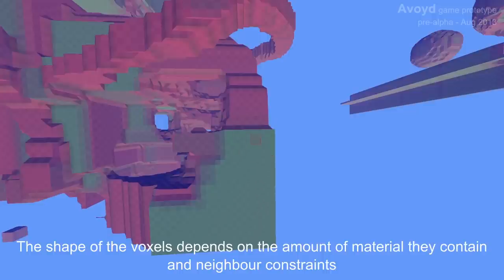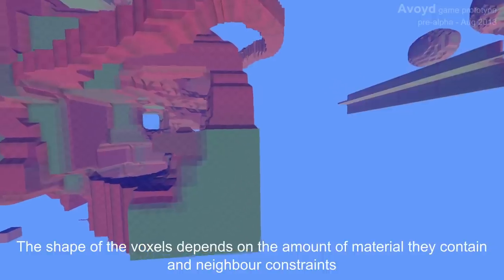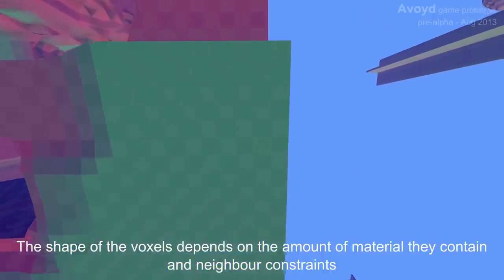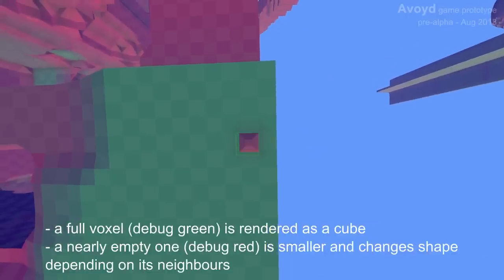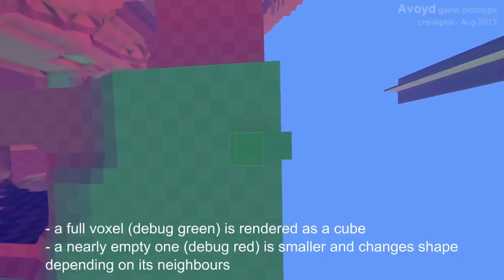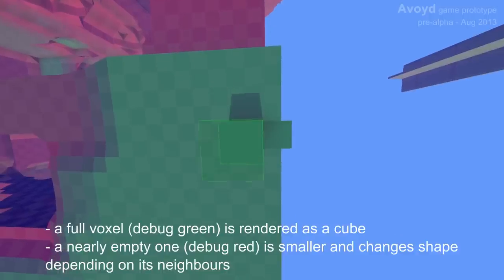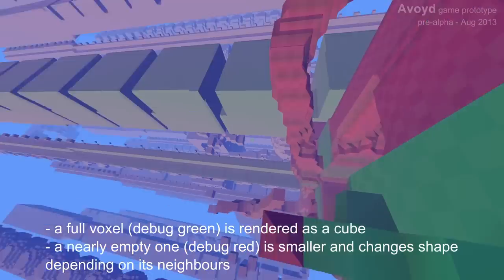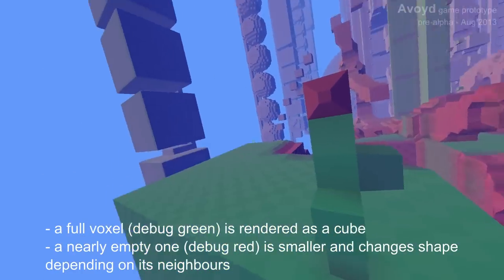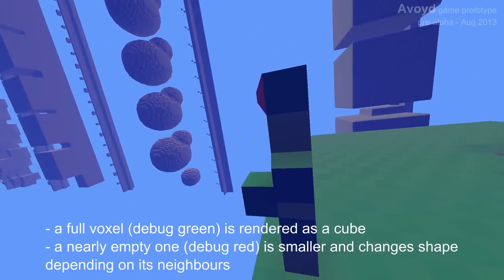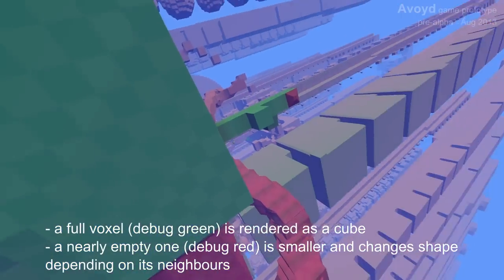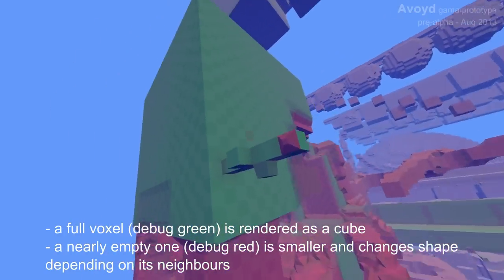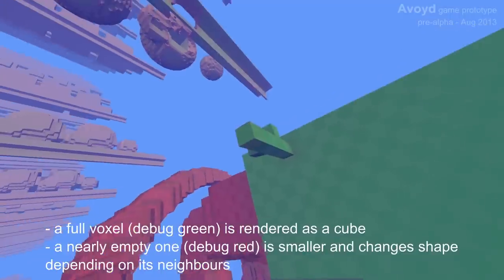I can show you this a bit better if I construct something with single voxels. So here I'll make a little tower. As you can see, one bit of the tower there has got a different shape. That's where there's only a tiny amount of material, whereas some of the other pieces, which are fully green, are almost completely square.